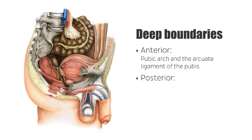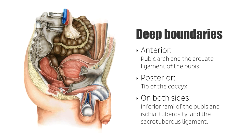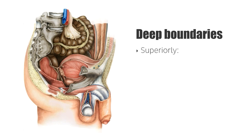Posteriorly, we're going to find the tip of the coccyx defining the posterior deep boundaries of the perineum, which you can also see here on this image. On both sides we're going to see the inferior rami of the pubis and ischial tuberosity, and also the sacrotuberous ligament. Defining the deep boundaries on a superior level, we're going to see the pelvic floor, and inferiorly you're going to find skin and fascia.